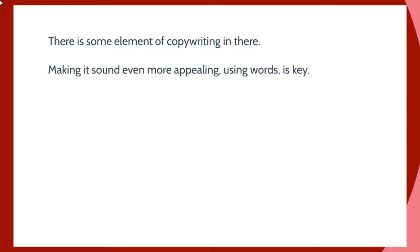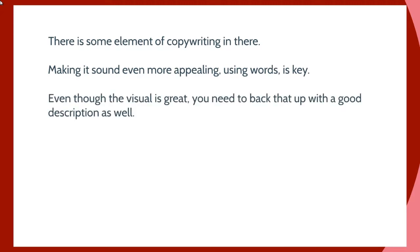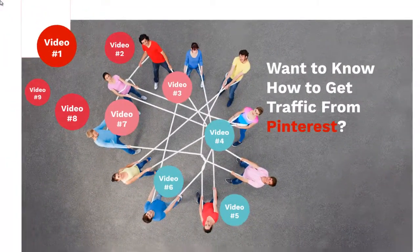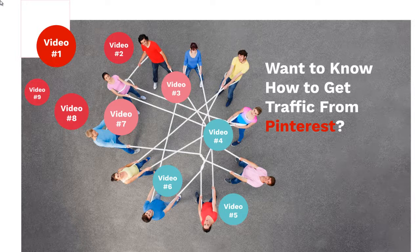There is an element of sales copywriting involved — making things sound appealing using words is key. The image attracts them, the description closes the deal to get them to click, and then really good content that is congruent to the image impresses them. Not many people do all three, so if you're one of the few who do, you'll be ahead of the competition. With that, let's move on to video eight, where we'll talk about a reverse engineering hack to help you get ideas for your images.